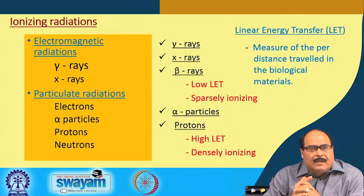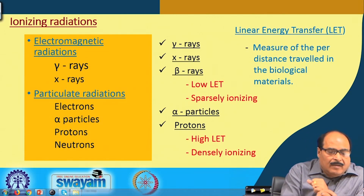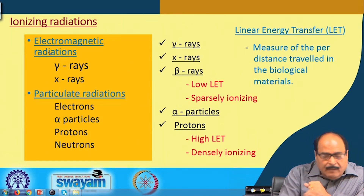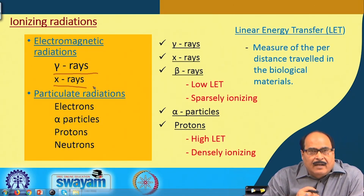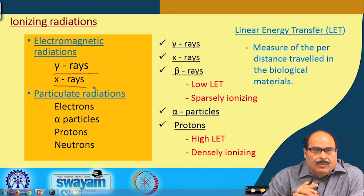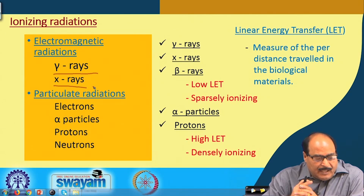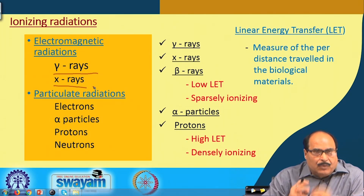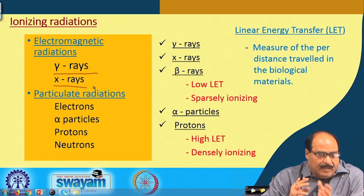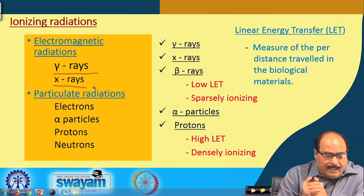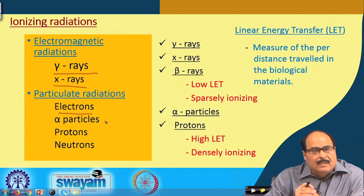There are several types of ionizing radiations. They may be electromagnetic radiations such as gamma rays and x-rays. Gamma rays are generally produced by the decay of certain radioactive elements like cobalt-60 and have a range of energies. X-rays can be produced by fast-moving ionizing particles such as electrons bombarded on suitable target materials. The other type of ionizing radiations may be particulate radiations like electrons, alpha particles, protons, and neutrons.